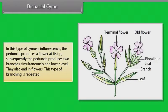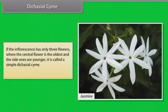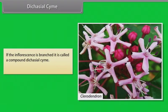In dicasial cyme, the peduncle produces a flower at its tip. Subsequently, the peduncle produces two branches simultaneously at a lower level; they also end in flowers, and this branching is repeated. If the inflorescence has only three flowers where the central flower is the oldest and the side ones are younger, it is called a simple dicasial cyme. Example: Jasmine. If it is branched, it is called a compound dicasial cyme. Example: Clerodendron.